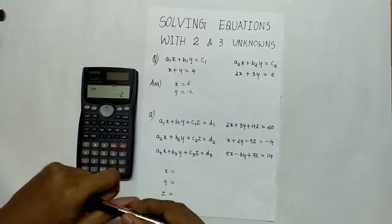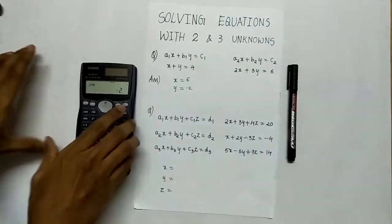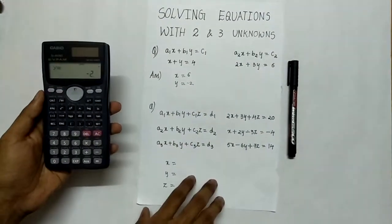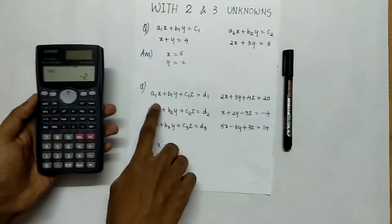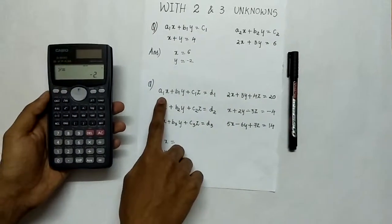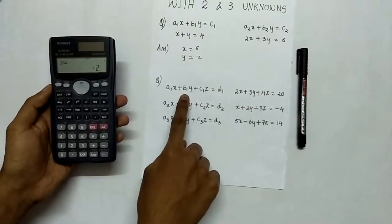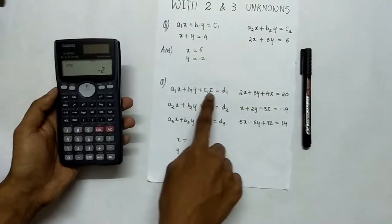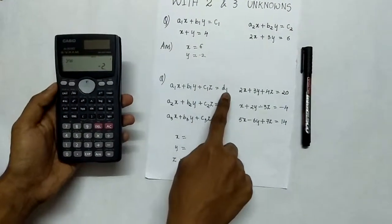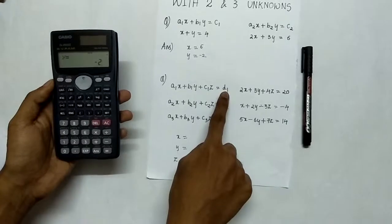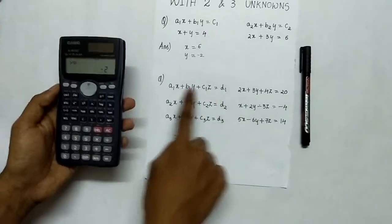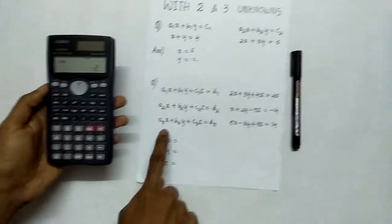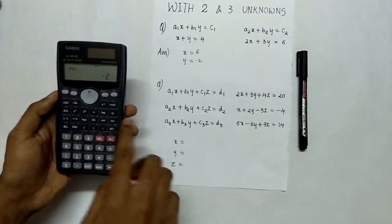Now we can solve the equation with 3 unknowns using the calculator where the format is: a1 is coefficient of x, b1 is coefficient of y, c1 is coefficient of z and d1 is a constant which is on the right hand side of equal to. The structure follows in the similar way for all the 3 equations.